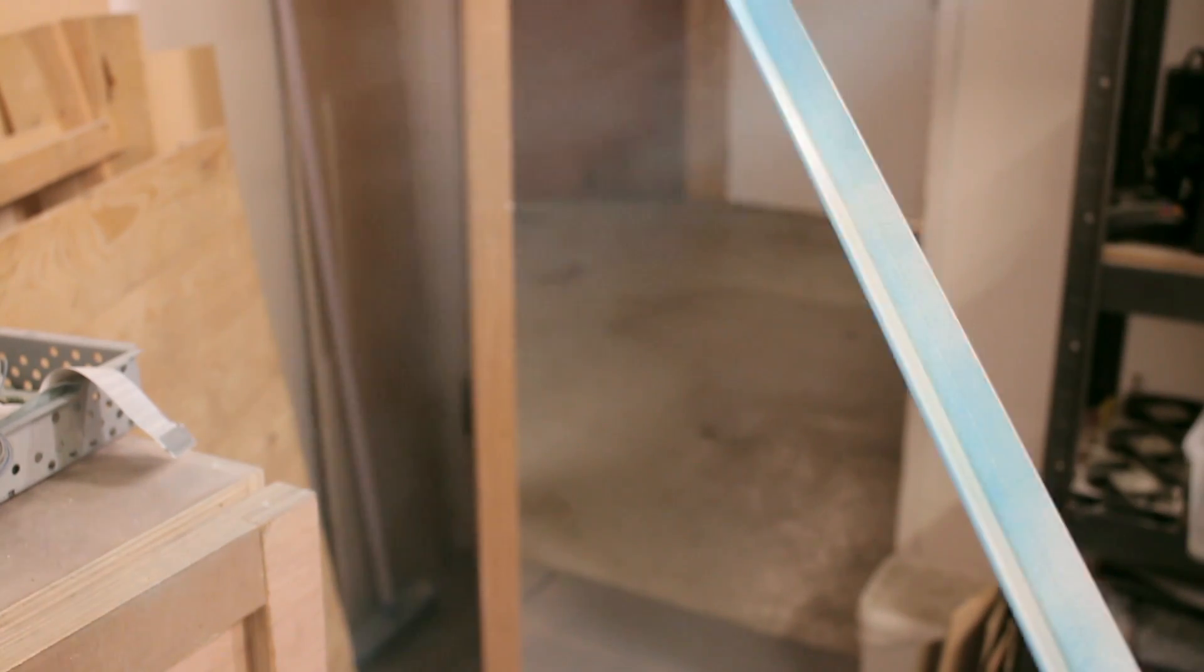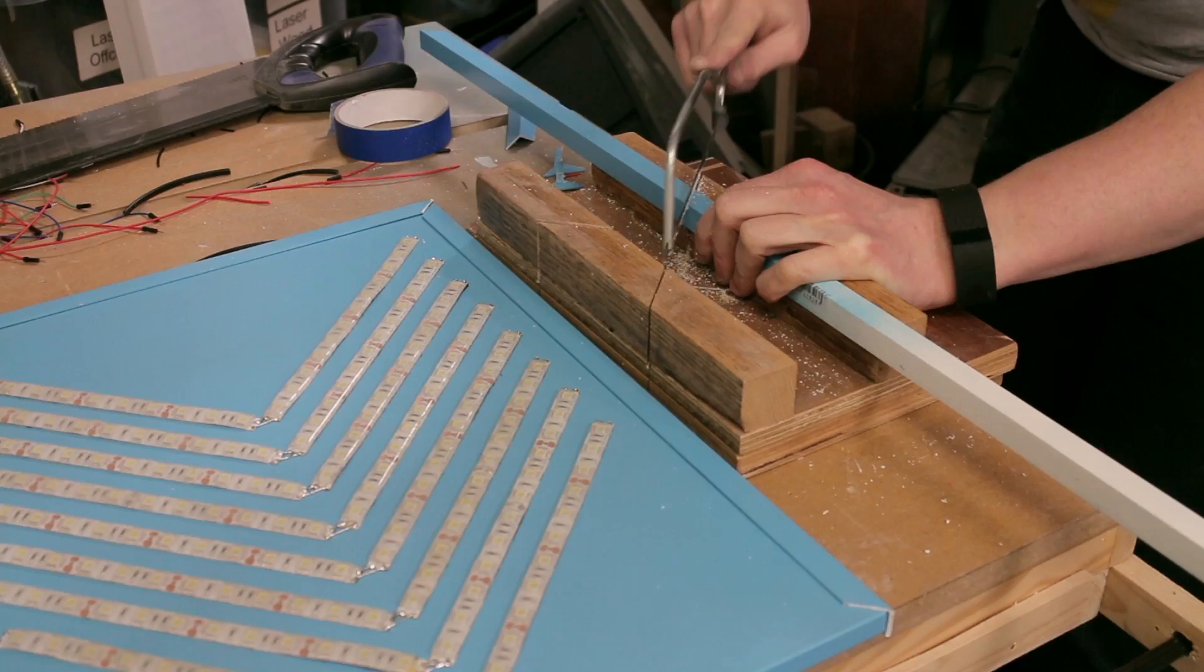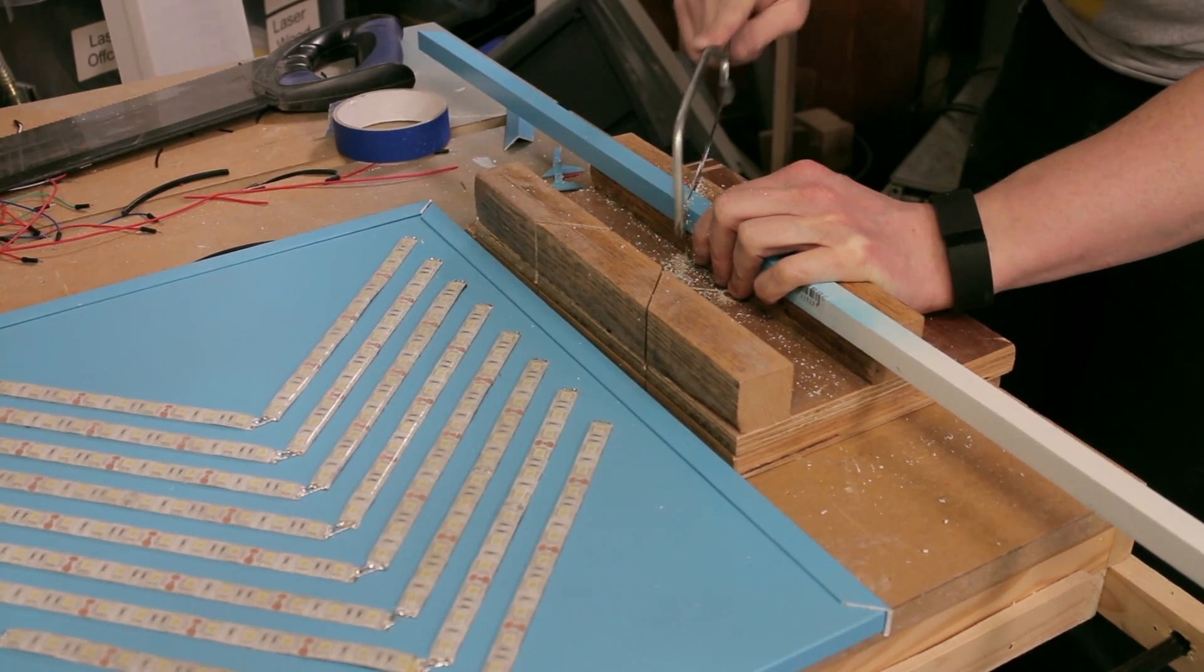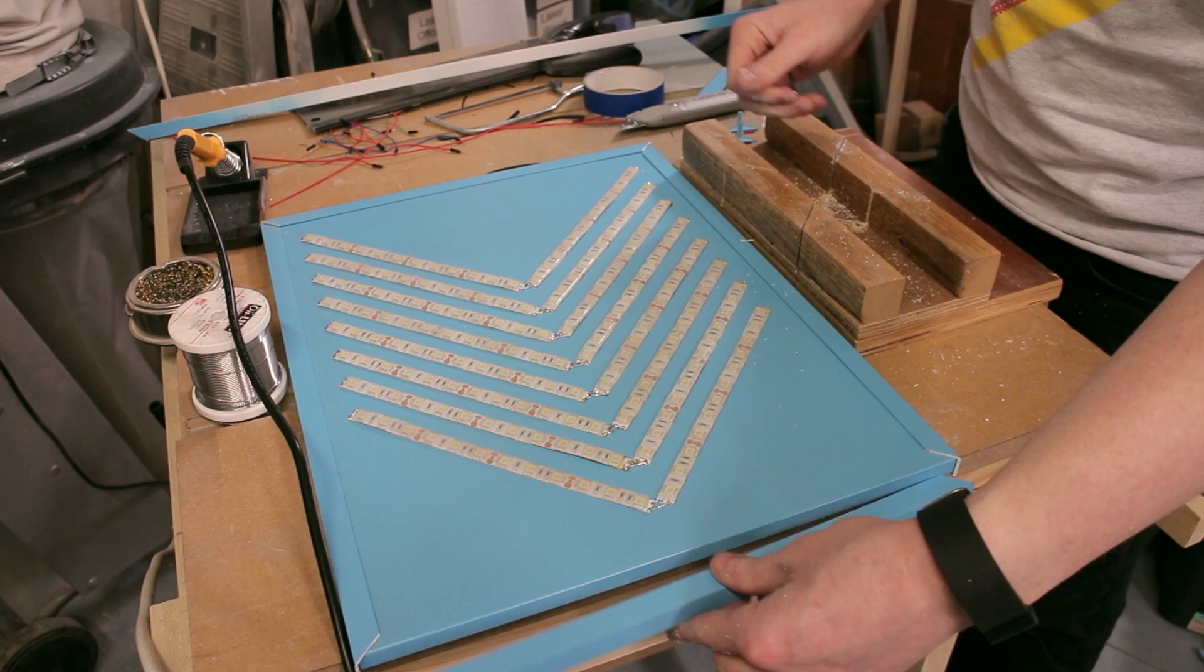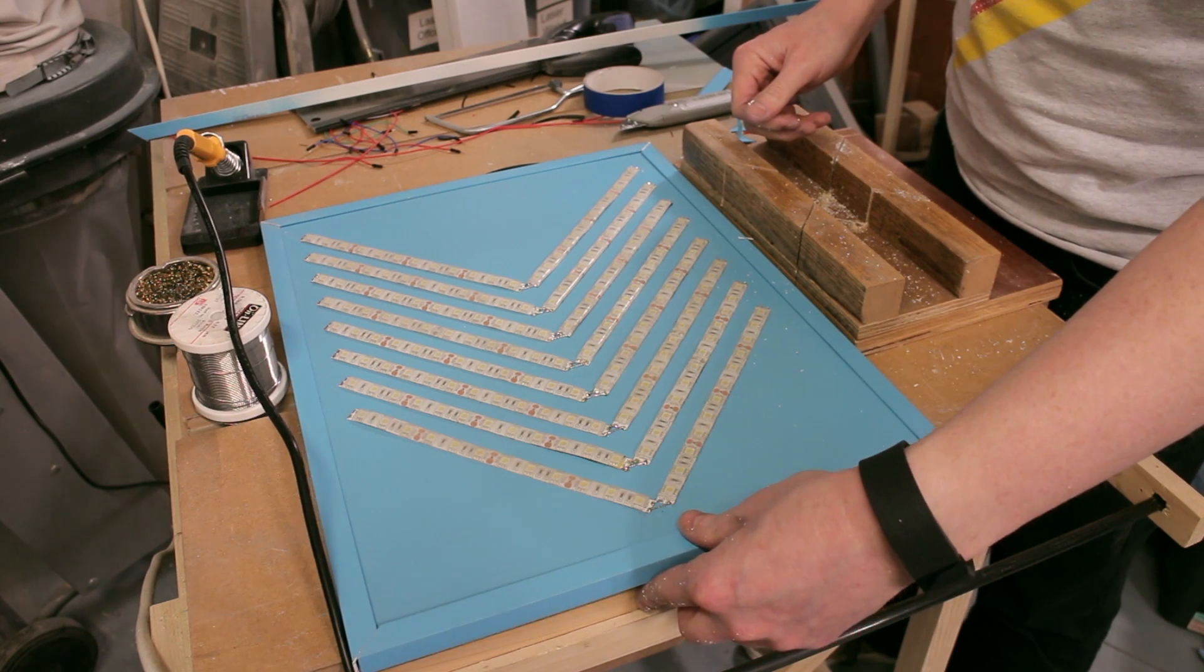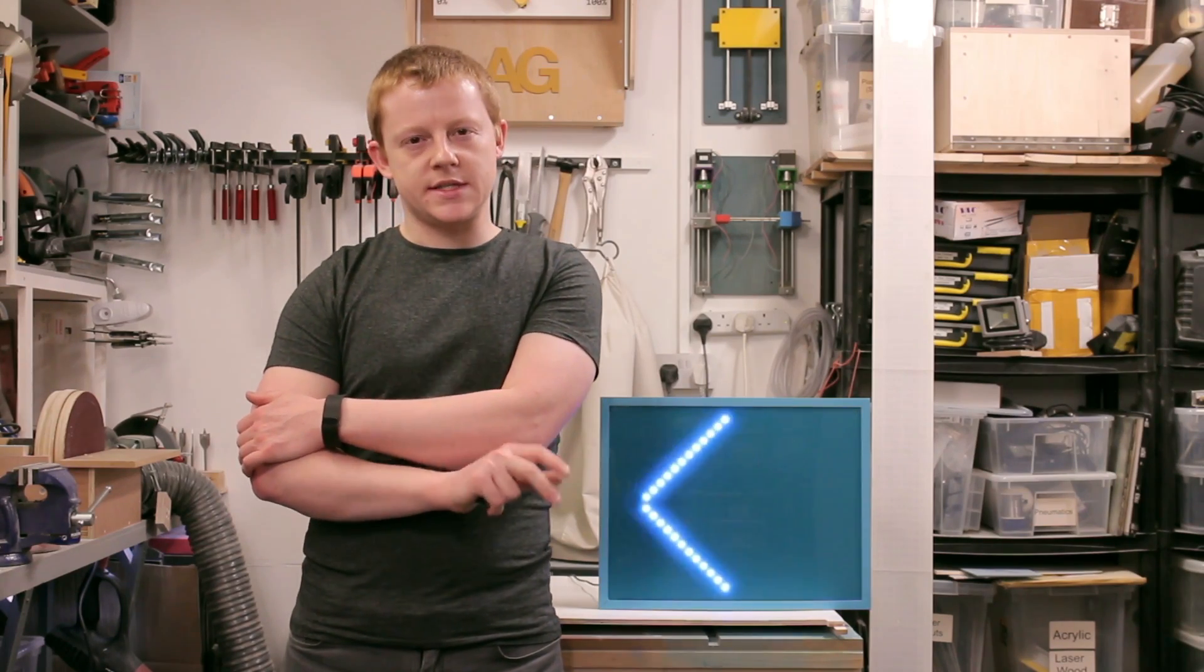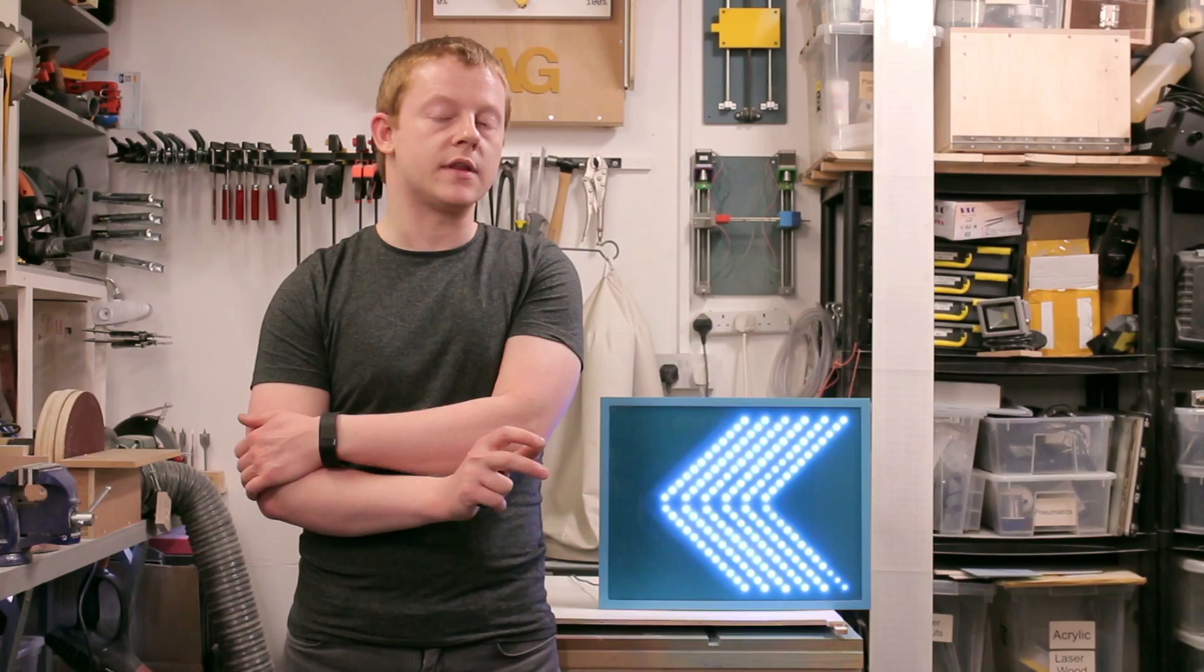This I then spray-painted blue, the same color as the backing, and I proceeded to cut four pieces out with 90-degree corners. To join it together I used super glue. I wasn't quite sure if this was going to hold, but it did a reasonable job considering the very tiny surface area that was being bonded.